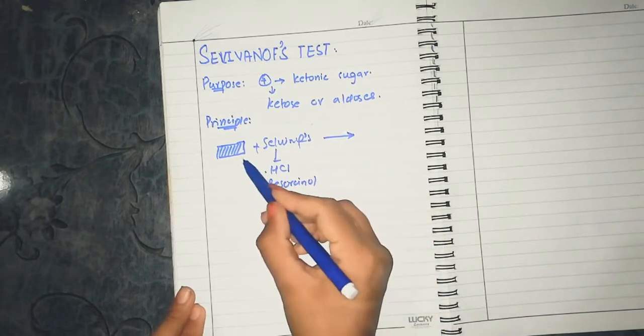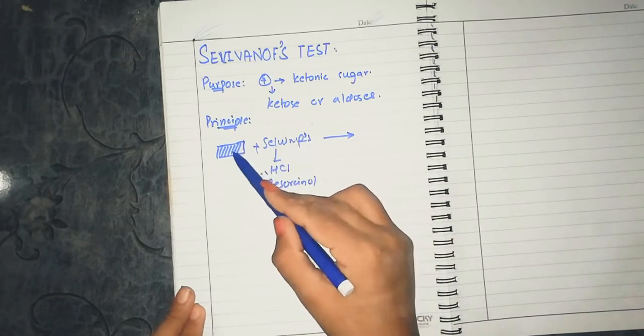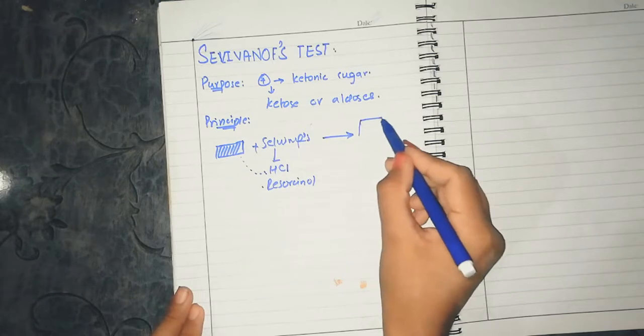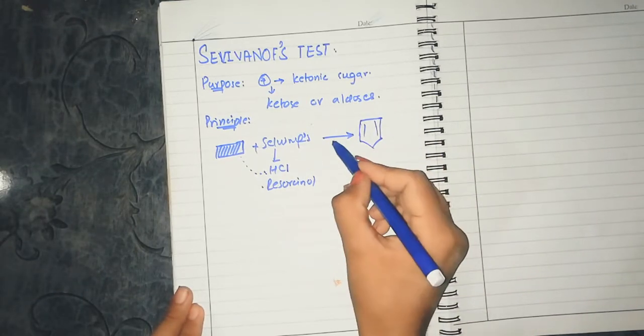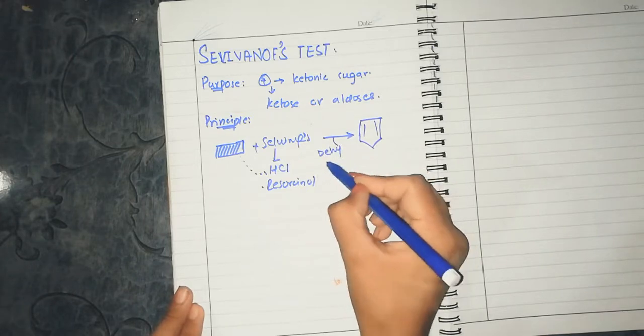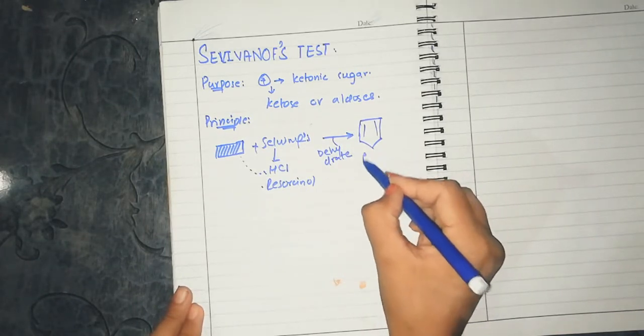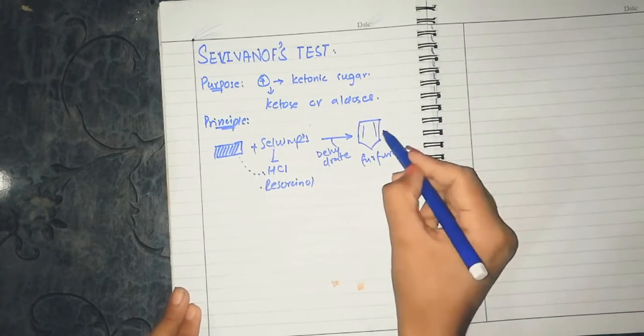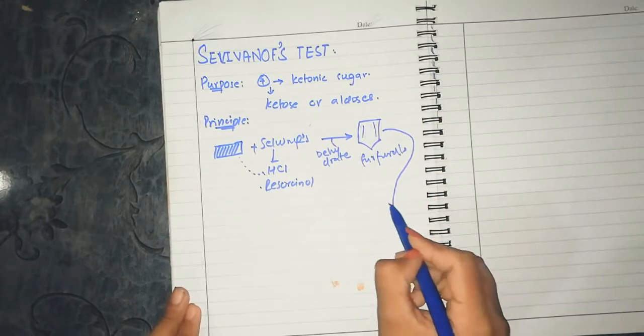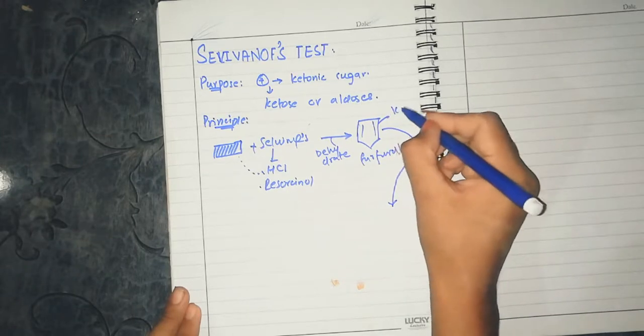HCl and resorcinol. In HCl's presence, carbohydrates are dehydrated into a compound called ketonic bodies.